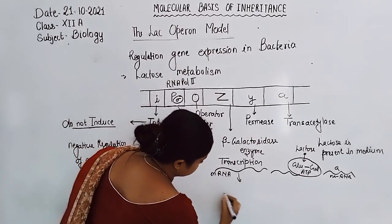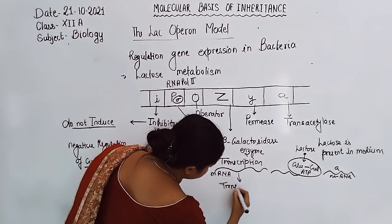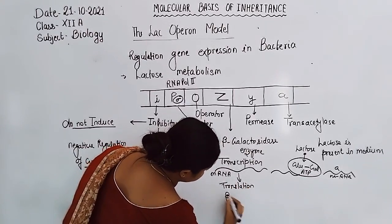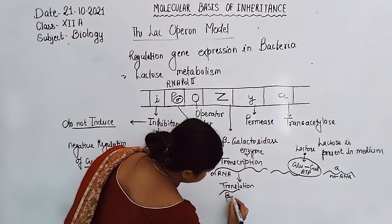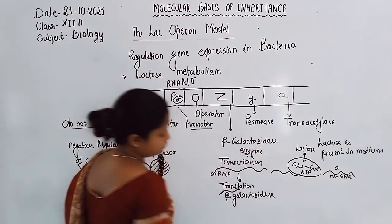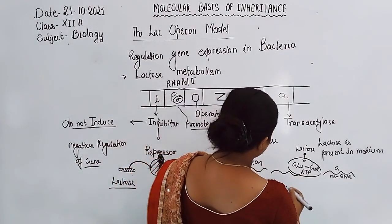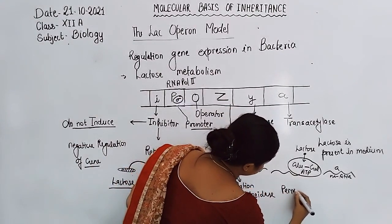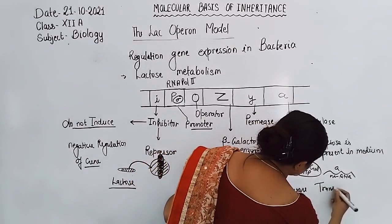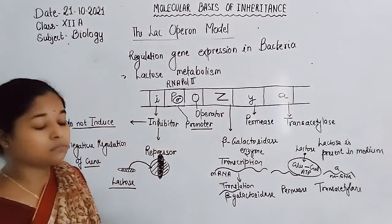Then protein synthesis — translation takes place. Through translation, the enzyme beta-galactosidase is synthesized. Then permease is synthesized, and transacetylase is synthesized as well. All such enzymes are synthesized after lactose binds with the repressor region.